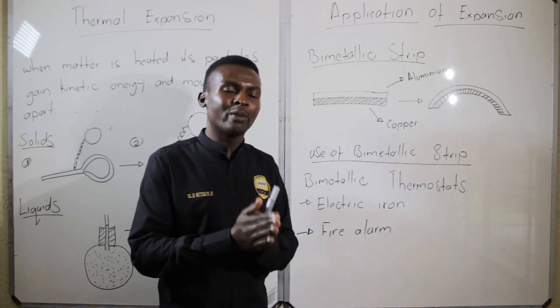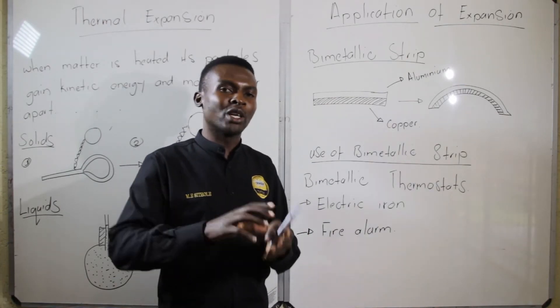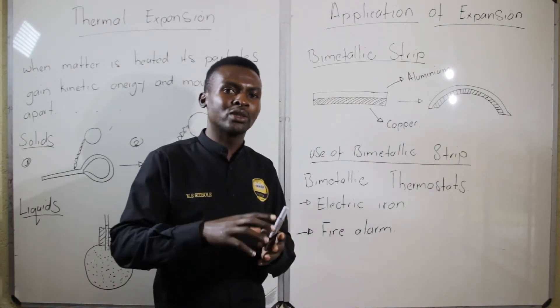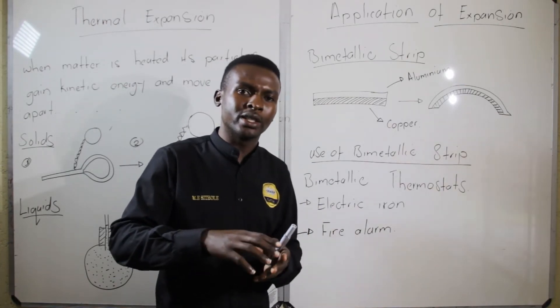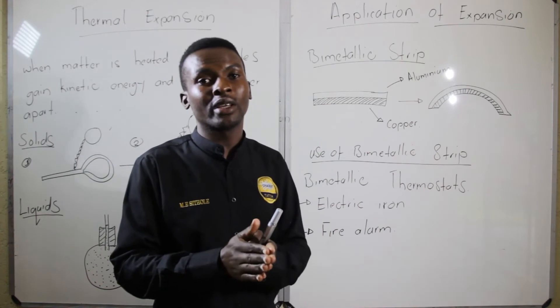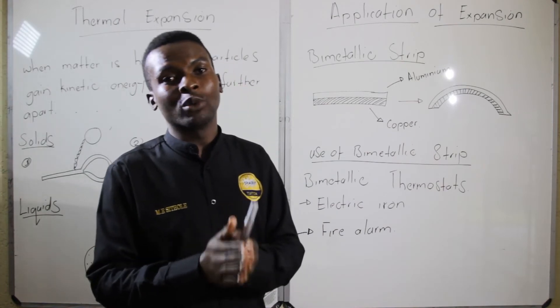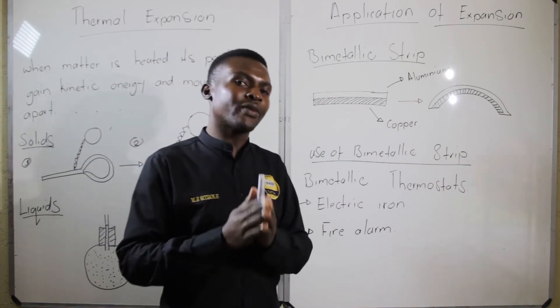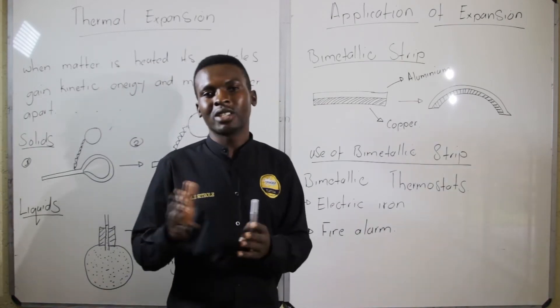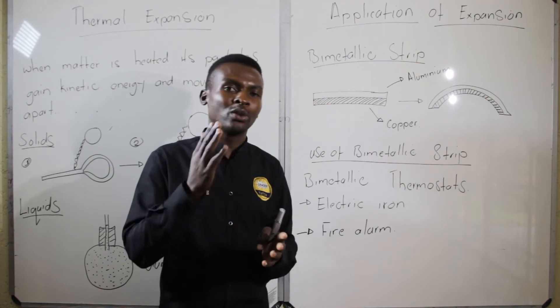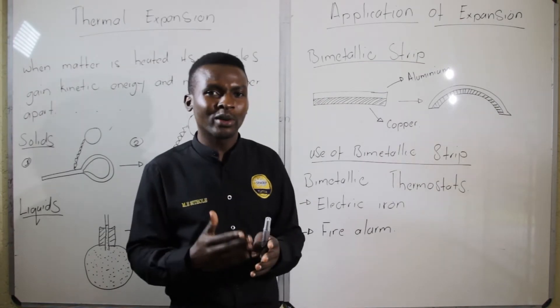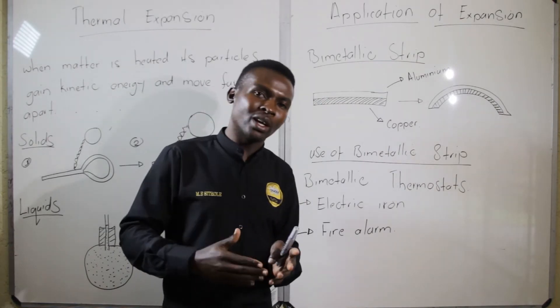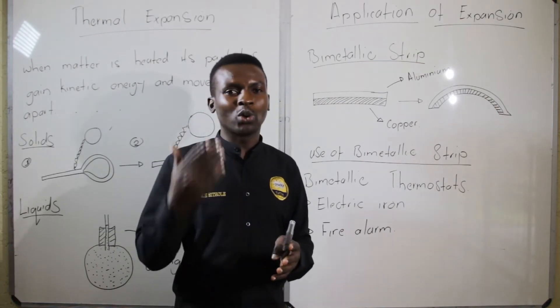When the bimetallic strip is much closer to the circuit it is able to break the circuit easily, but when it is further away from the circuit the circuit will take longer — hence your iron will take longer heating your clothes.